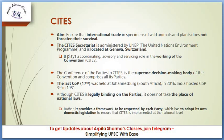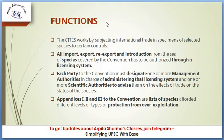CITES works by subjecting international trade in specimens of selected species to certain controls. All import, export, re-export, and introduction from the sea of species covered by the Convention must be authorized through a licensing system. All such trade needs to pass through this licensing system.